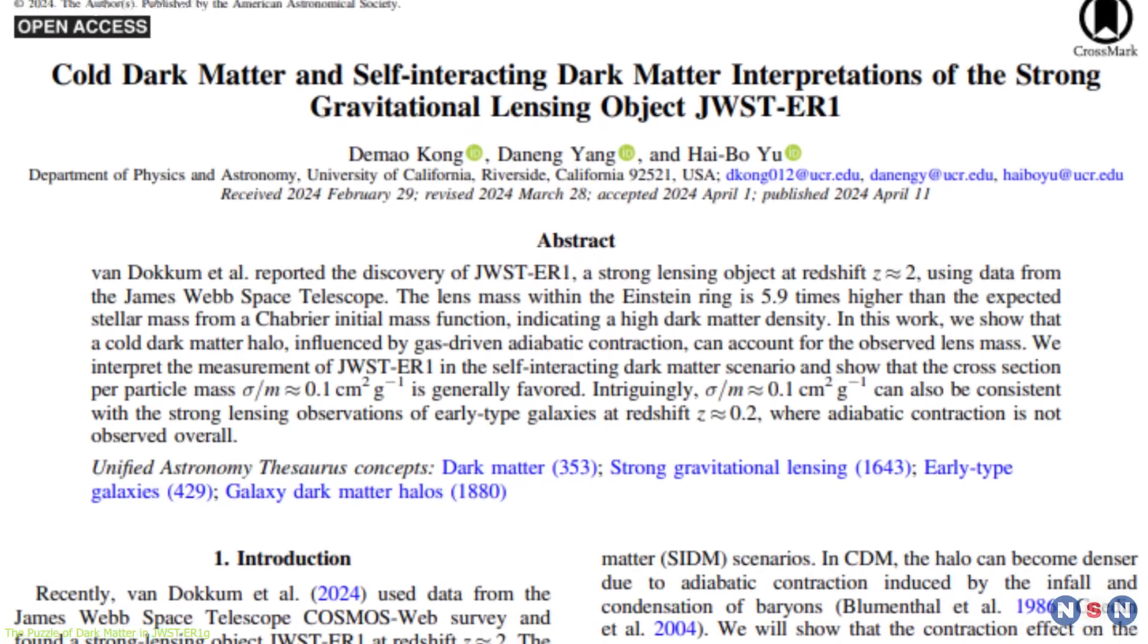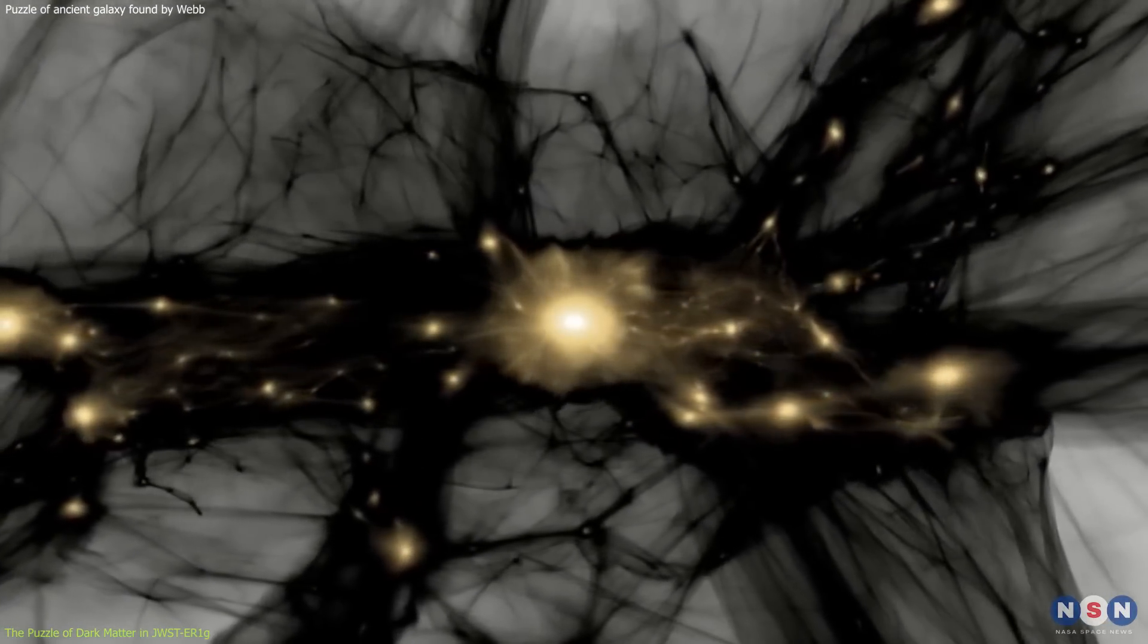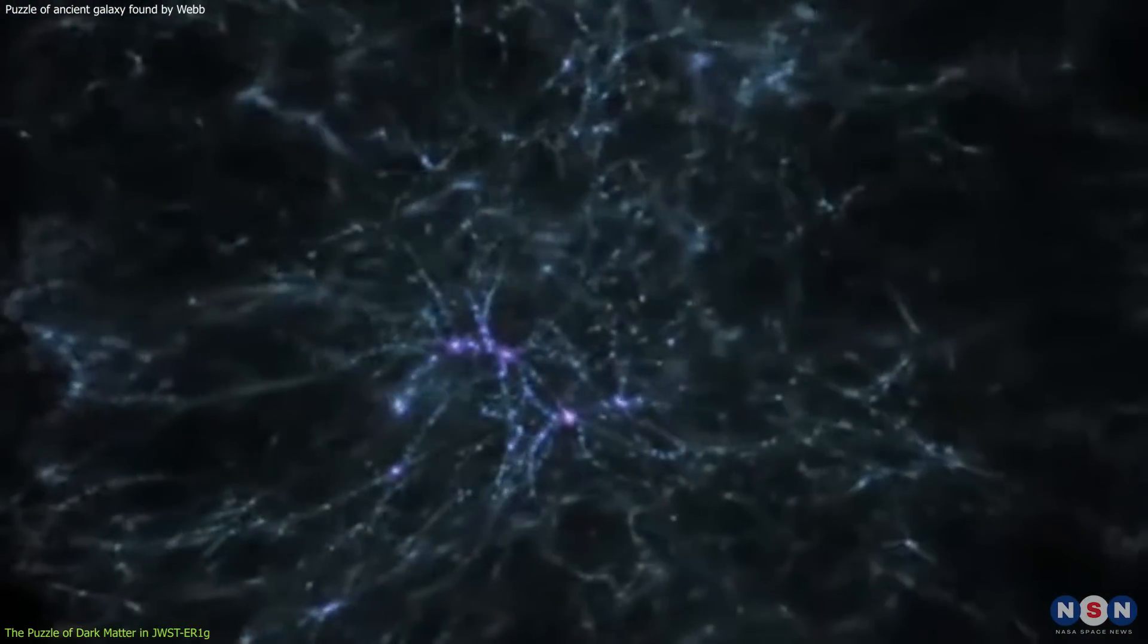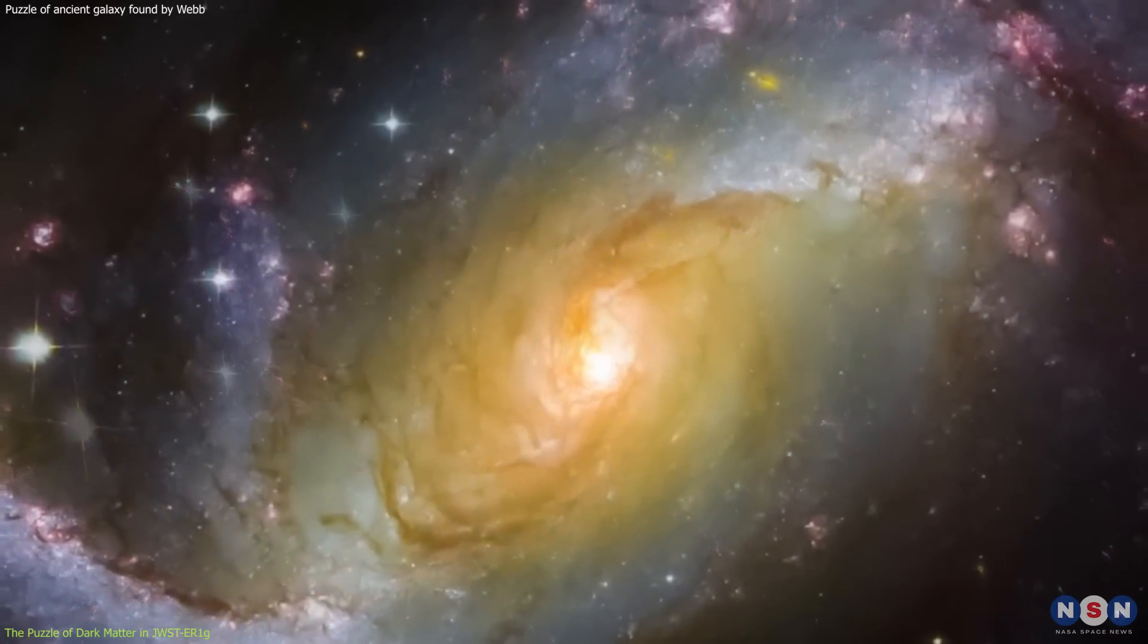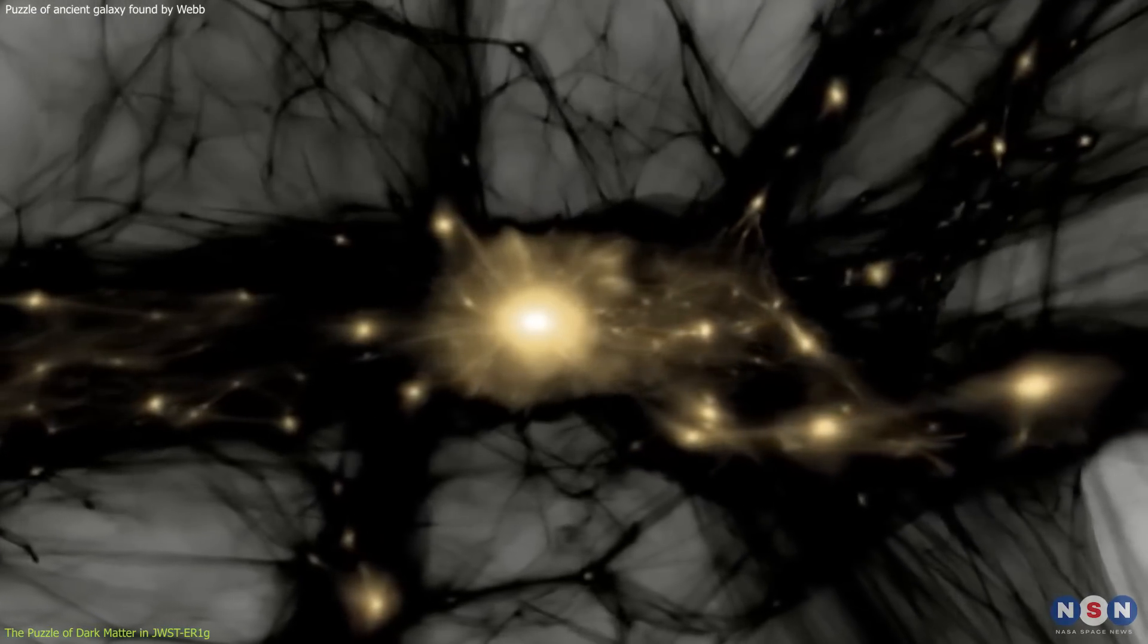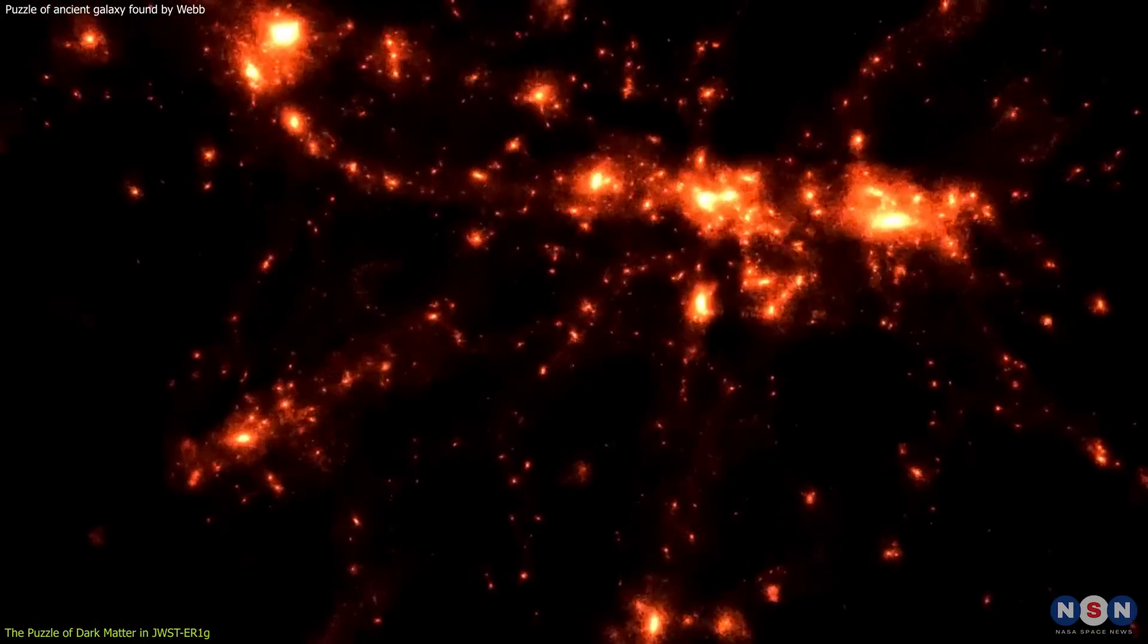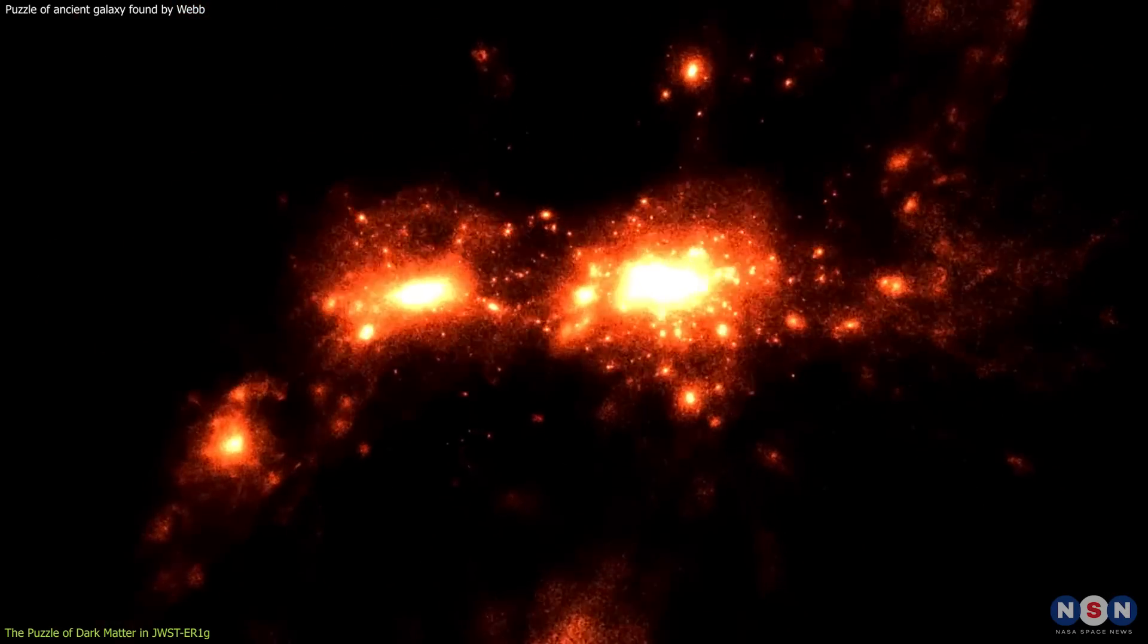Why is there so much dark matter concentrated in this particular galaxy? Researchers propose a compelling explanation that revolves around the interaction between the galaxy's dark matter halo and the baryonic matter, or ordinary matter, that collapses into this halo. As the pristine gas and stars accumulate in the galaxy's gravitational well, they may compress the dark matter halo, increasing its density. This compression could lead to a higher concentration of dark matter in a relatively smaller volume, explaining the unexpected density observed.